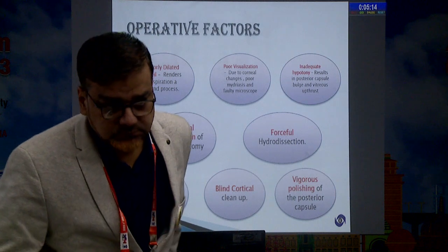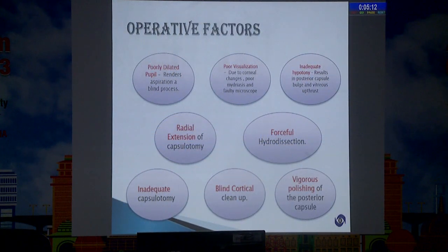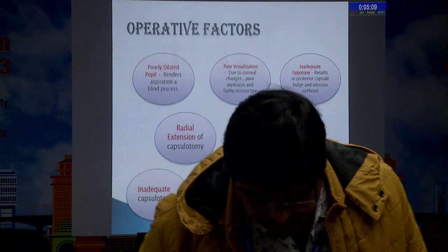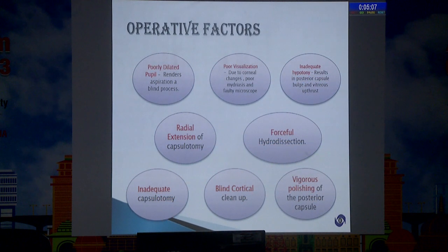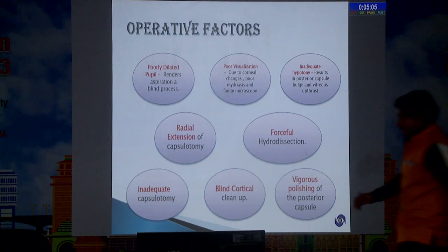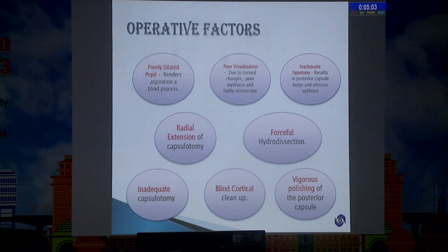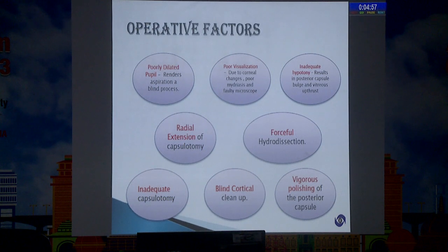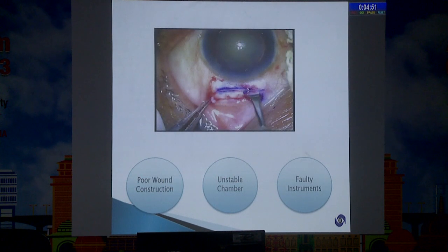Other operative factors include a poorly dilated pupil, poor visualization due to some corneal opacity, inadequate hypotony not maintained before surgery, and while doing a capsulotomy, if there's any radial extension, then forceful hydro-dissection, inadequate capsulotomy, and blind cortical — all these operative factors are responsible for the development of posterior capsule rupture related to vitreous loss.